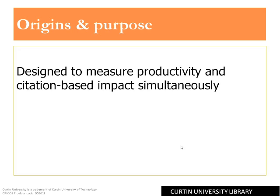The H-Index is designed to measure both productivity — the number of publications — and citation-based impact — the number of citations — simultaneously. By combining the two measures into a single number, this can reduce the artificial influence on citation counts of one or two highly cited papers.